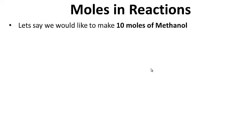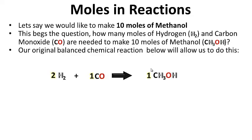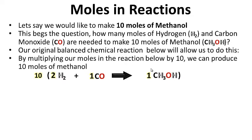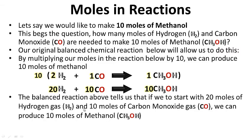Moles and reactions — let's say we would like to make 10 moles of methanol. This begs the question: how many moles of hydrogen and carbon monoxide are needed? Using our original balanced chemical reaction and multiplying by 10, we need 20 moles of H2 along with 10 moles of carbon monoxide to make the 10 moles of methanol needed.